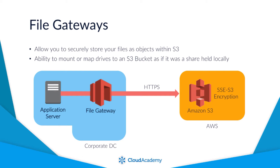A local on-premise cache is also provisioned for accessing your most recently accessed files to optimize latency, which also helps to reduce egress traffic costs. When your file gateway is first configured, you must associate it with your S3 bucket, which the gateway will then present as an NFS v3 or v4.1 file system to your internal applications. This allows you to view the bucket as a normal NFS file system, making it easy to mount as a drive on Linux or map a drive to it in Microsoft. Files written to these NFS file systems are stored in S3 as individual objects as a one-to-one mapping of files to objects.